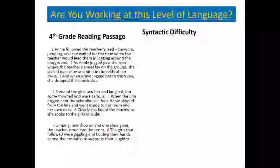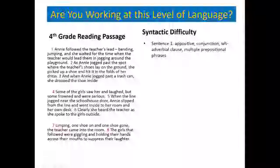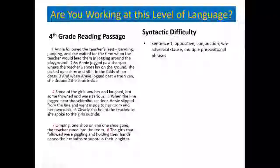Our opening question is: are you working at this level of language? This is a fourth grade reading passage. 'Annie followed the teacher's lead, bending, jumping, and she waited for the time when the teacher would lead them in jogging around the playground.' When we look at that first sentence, we see that there's an appositive structure — a sentence or clause that's introduced to give a little more information in terms of what 'teacher's lead' means.